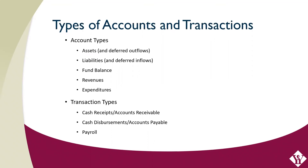There are also basic types of accounting transactions to be aware of: cash receipts, cash disbursements, and payroll. All of these are fairly self-explanatory. Accounts receivable and accounts payable are related to the cash receipts and cash disbursement transaction types, respectively, and are used to account for differences in the timing of revenue or expenditure recognition, as discussed in relation to the basis of accounting.